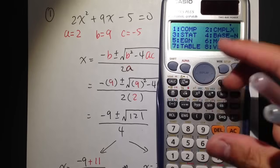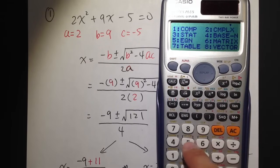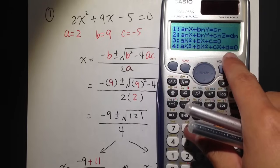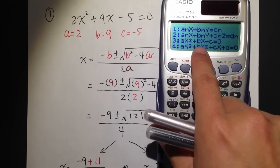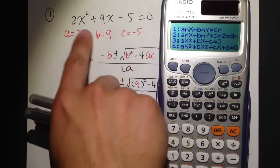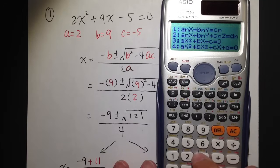This calculator has a few equation solvers built in for us. So let's see what do we have? Number 5, and notice that we have 4 options. The third option is Ax squared plus Bx plus C is equal to 0, and this is exactly what we have right here. So of course, that's the one that we are going to choose. So go to 3.